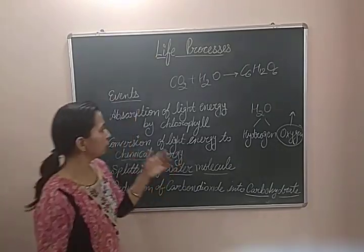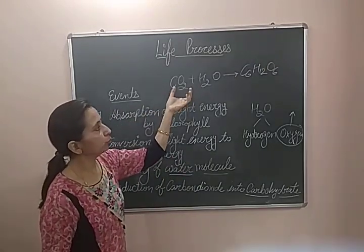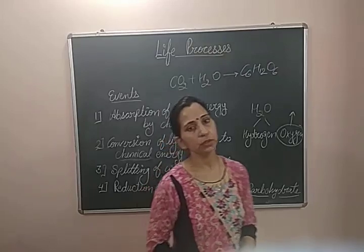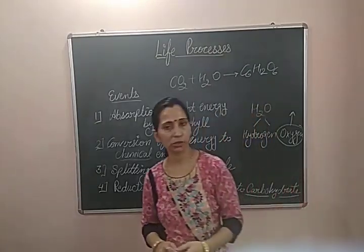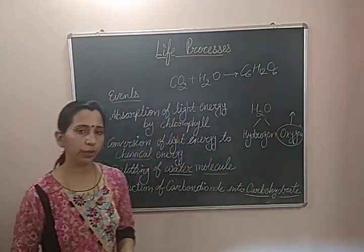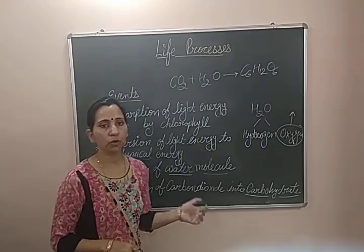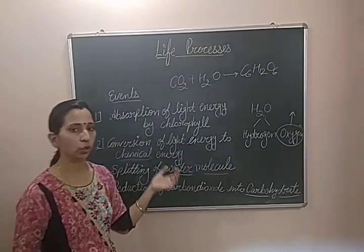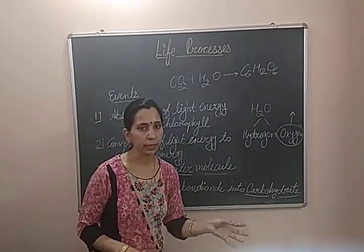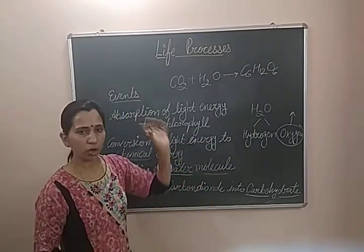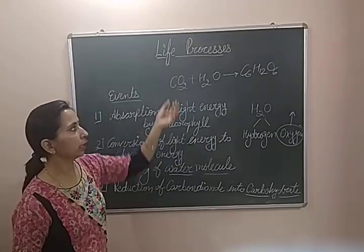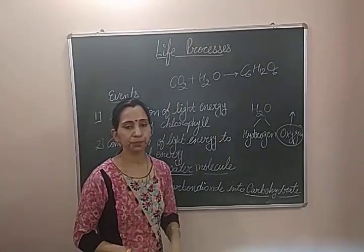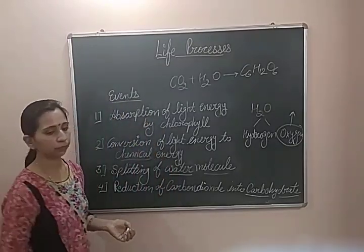Now we will discuss how carbon dioxide is absorbed by the plants. Leaves contain some tiny pore structures, and these pore structures are known as stomata. Stomata are the place from where carbon dioxide comes inside the leaves and oxygen is released outside the leaves. We will discuss the structure of stomata in more detail.